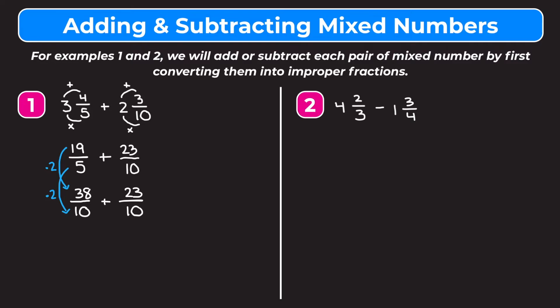So we're going to do 19 times 2 which gives us 38. And now we're going to add the numerators. So 38 plus 23 is going to give us 61 on the top. So we get 61 tenths. Then we're going to write our answer as a mixed number, so we have to change 61 tenths into a mixed number. 10 goes into 61 six times and there's a remainder of 1. So we get 6 and 1 tenth as our answer.